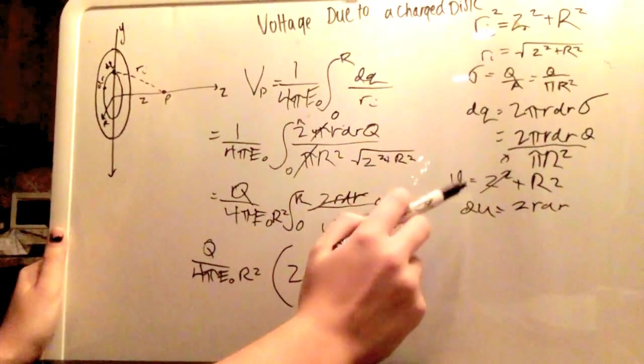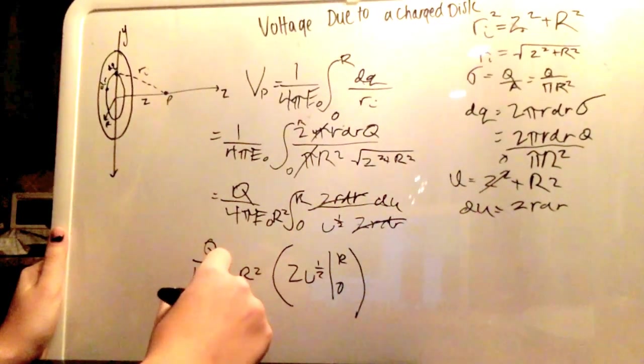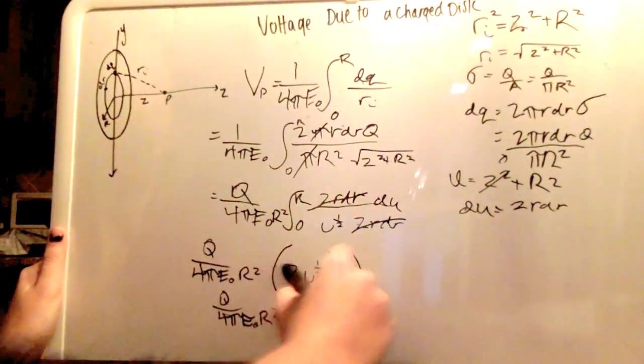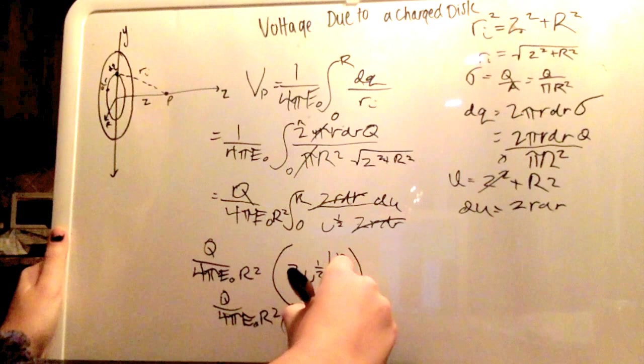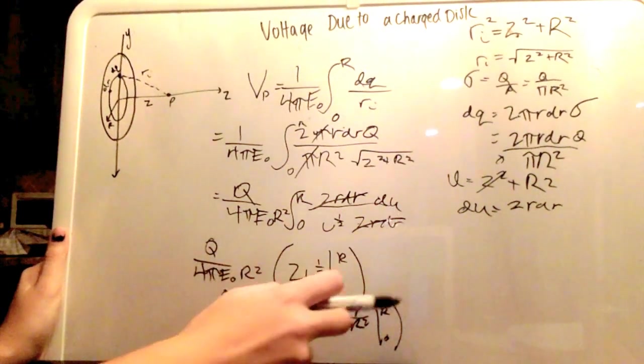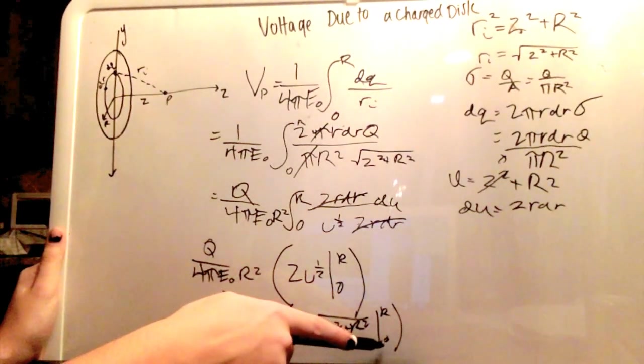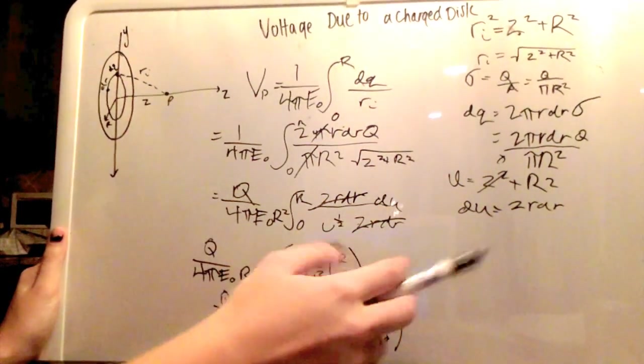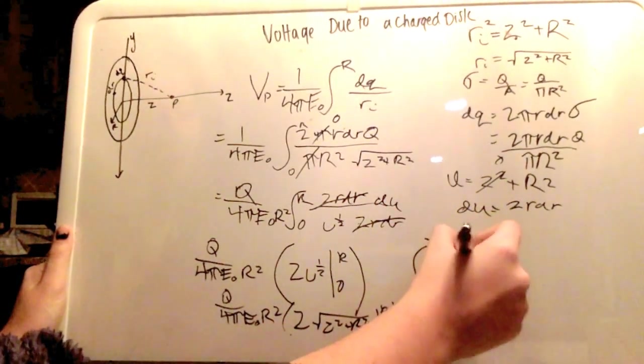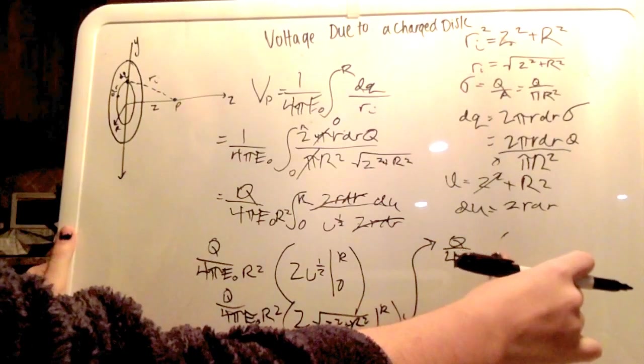Now, you're going to substitute the u back in, so it's going to be q over 4pi e0 r squared, from 2 to z squared, plus r squared, from 0 to r. Now, you plug that, plug the r in for this r variable, plug the 0 in for that, and then you subtract that from the 0 of, then when you plug 0 into that. So, bringing that up here, it's going to be q over 4pi e0, oh, can't forget about the r squared.